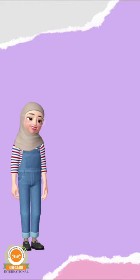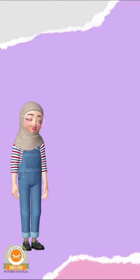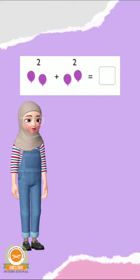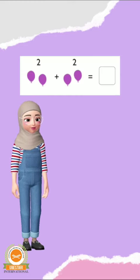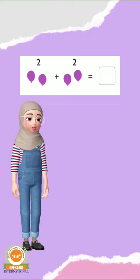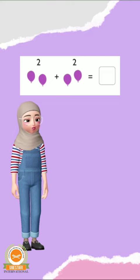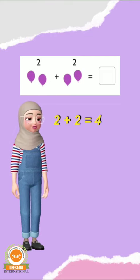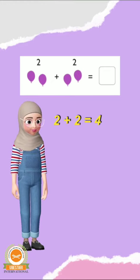So, the next one is 2 plus 2 equals what? Count the objects together: 1, 2, 3, 4. So, the answer is 4.